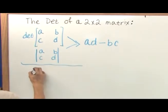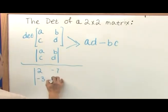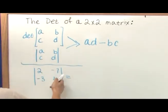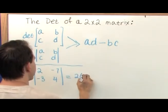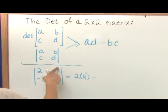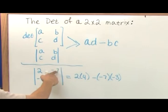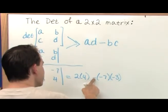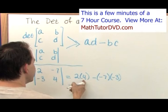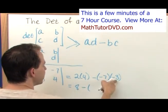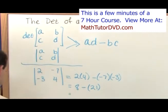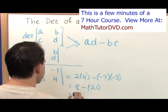Let's go ahead and do a few. If I were going to find the determinant of the matrix 2, negative 7, negative 3, 4 — I'm not going to memorize this, I'm not going to label A, B, C, and D. I'm going to put an X with my fingers, literally. 2 times 4 minus negative 7 times negative 3. You must put the minus there or you're going to get the wrong answer. So 2 times 4 is 8, minus negative 7 times negative 3 which is positive 21, and 8 minus 21 is negative 13.